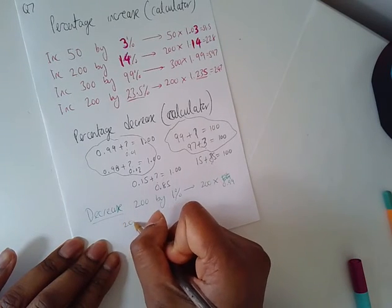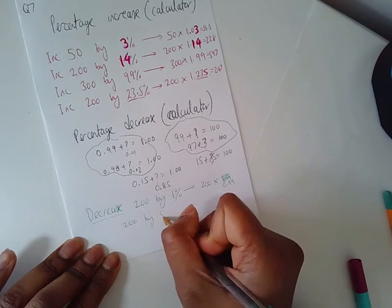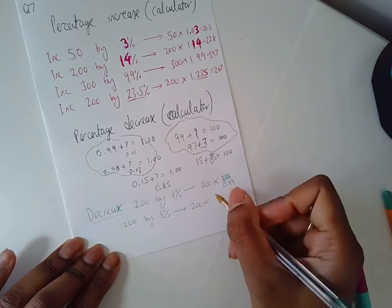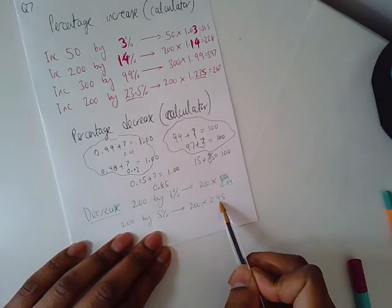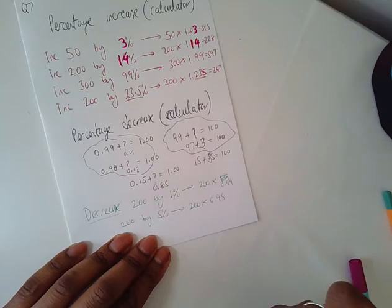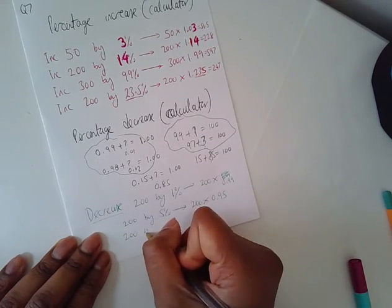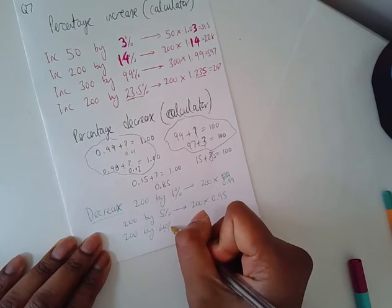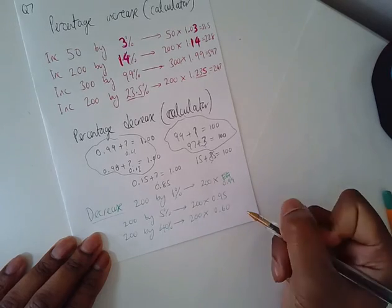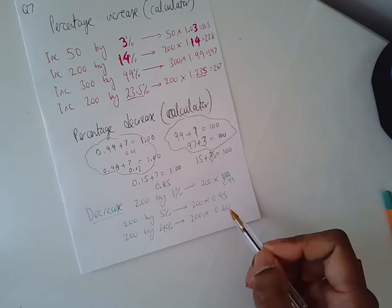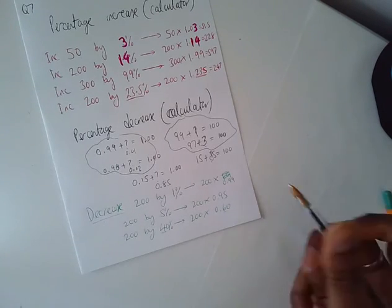Let's try this one then. Decrease 200 by 5%. You'll be doing 200 times 0.95. Think of this like a number bond. 95 and the 5 makes the 100. Let's say you want to decrease 200 by 40%. So do 200 times 0.60. You don't need the zero there, but I'm just making it easy for you to see this. Because you know 60 and the 40 makes 100 on the number bond.